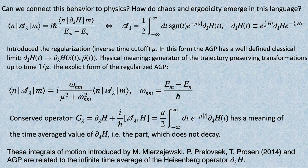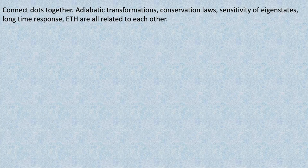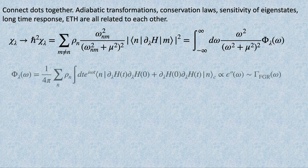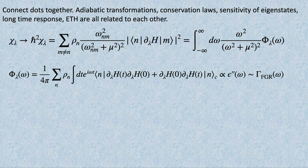Mathematically it's clear why this works: if you take a Heisenberg operator and do a time average, only the diagonal part of the operator remains, and the diagonal part is the conserved part. So this object g is just the time-averaged part of d_lambda H, and A is the odd time integral of this. Adiabatic transformations connect with conservation laws, sensitivity of eigenstates, long-time response, ETH, integrability, and so on. This is actually a good object which connects many different things: quantum annealing, counter-diabatic driving, dissipation, mass renormalization, and many more applications.